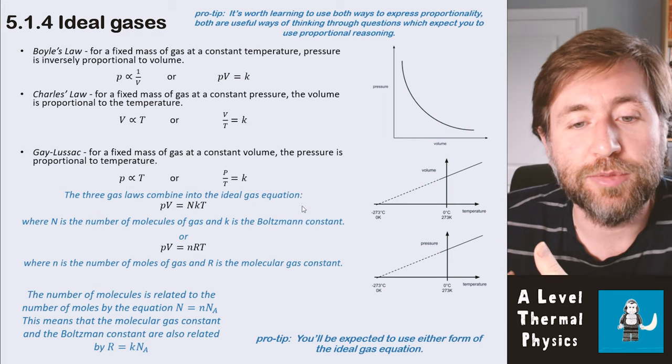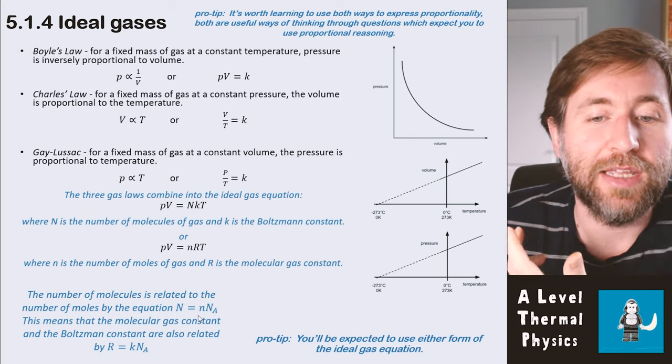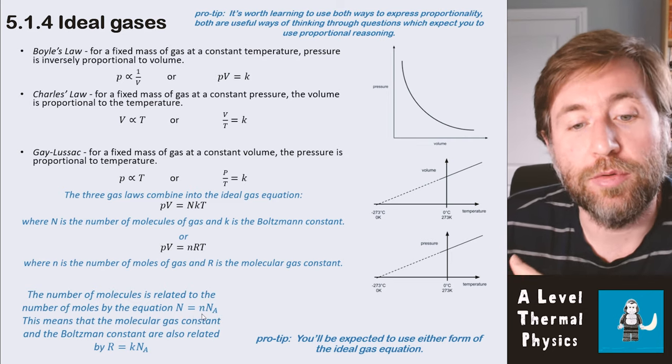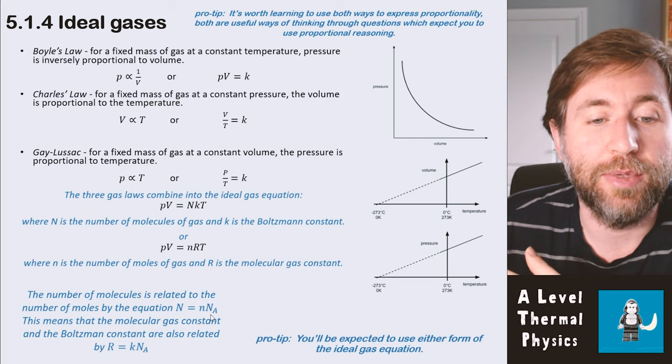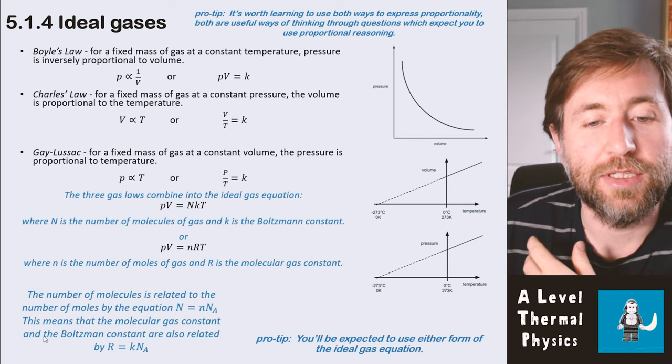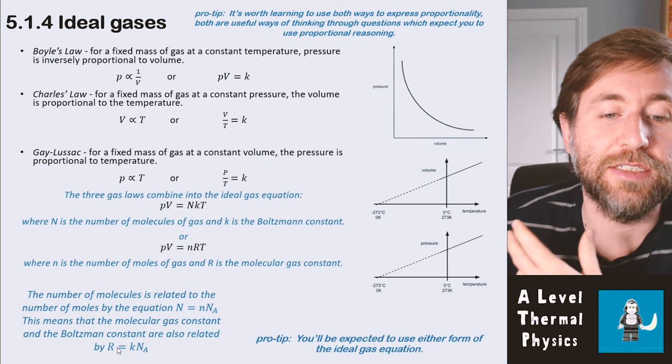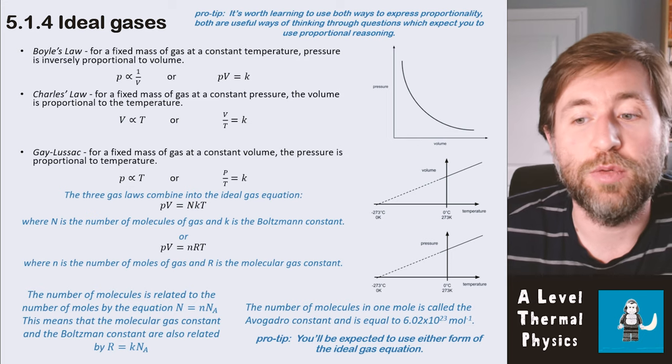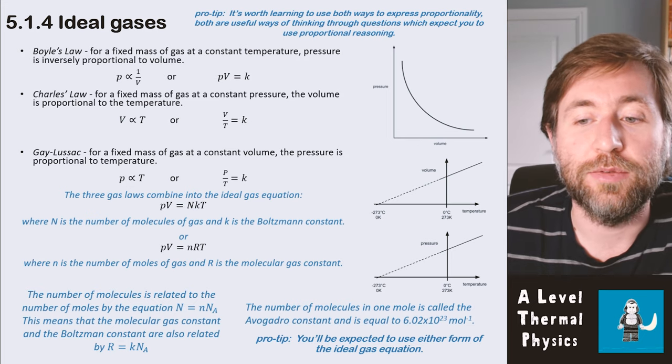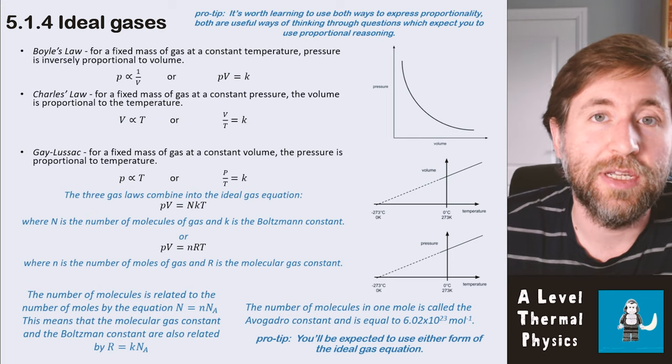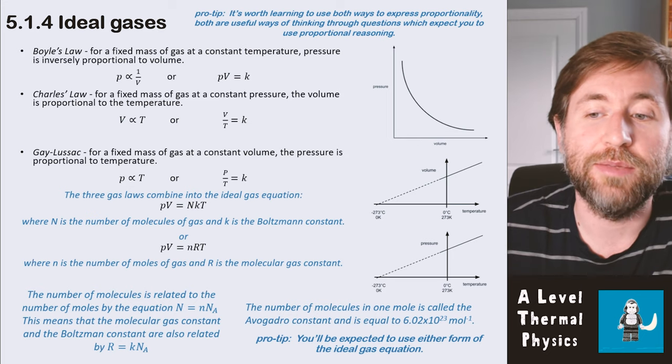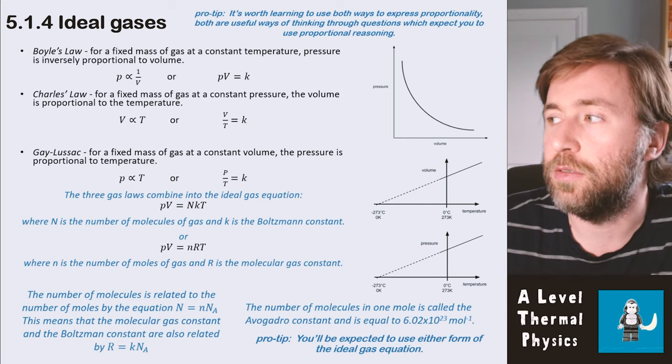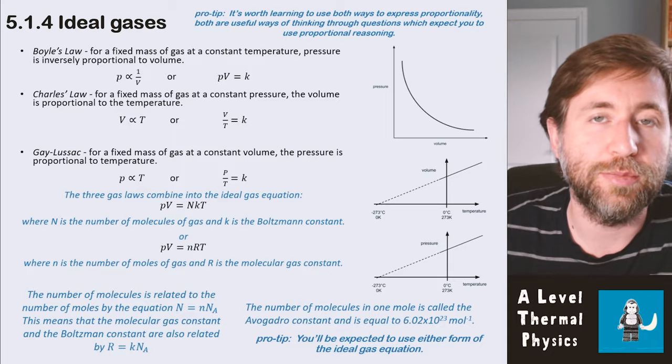by the equation N = n·NA. So the number of molecules is equal to the number of moles multiplied by Avogadro's number. And this means therefore that the molecular gas constant and the Boltzmann constant are also related by R = k·NA. Avogadro's number is the number of molecules in any one mole of a substance, equal to 6.02 × 10^23 per mole. So that is how many molecules are in one mole of any substance. Some A-levels only require you to use one or the other, but in OCR they require you to use both.